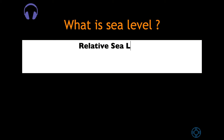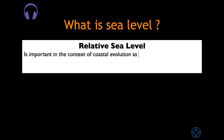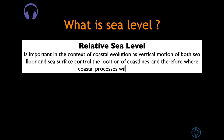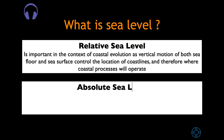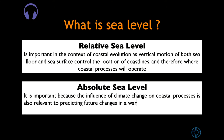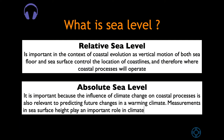The relative sea level is important in the context of coastal evolution, as vertical motion of both sea floor and sea surface control the location of coastlines, and therefore where coastal processes will operate. The absolute sea level is important because the influence of climate change on coastal processes is also relevant to predicting future changes in a warming climate. Measurements in sea surface height play an important role in climate-driven sea level changes.